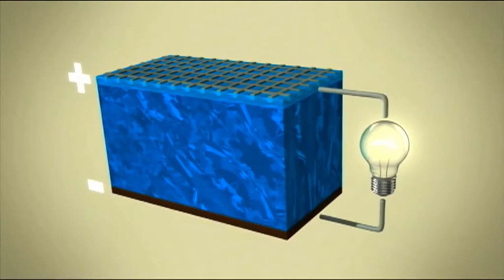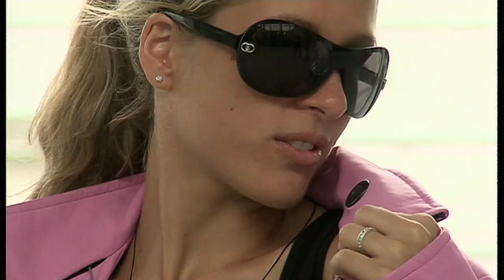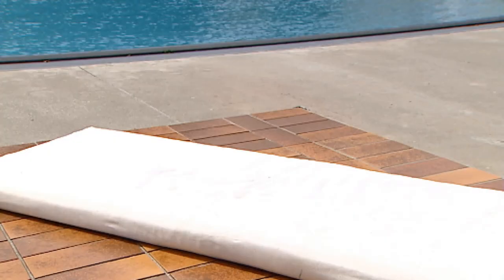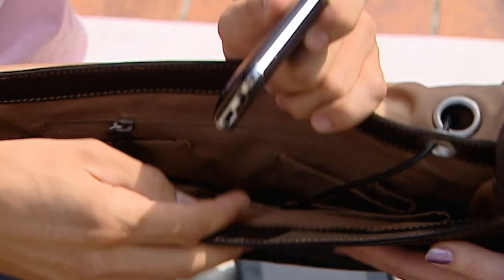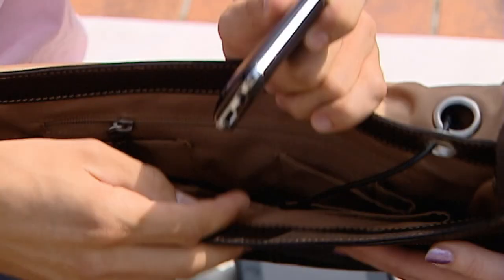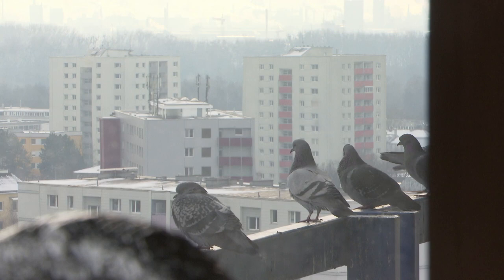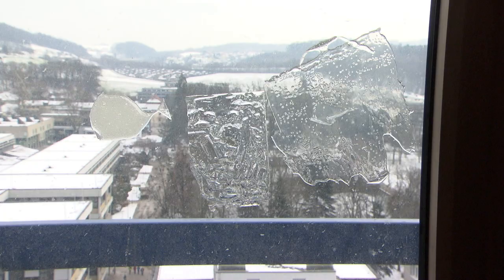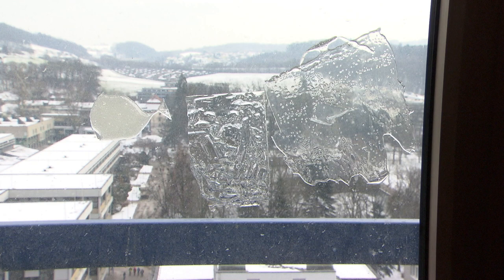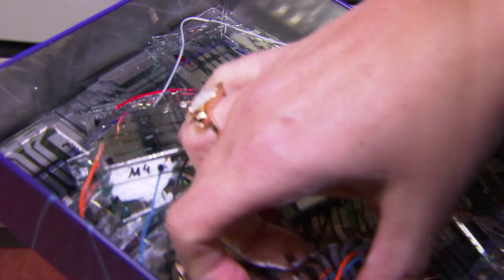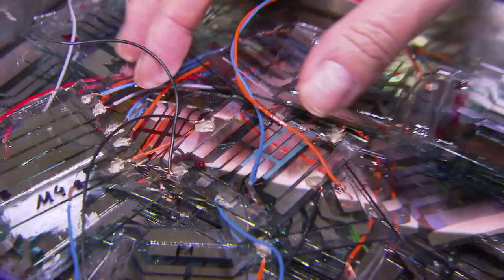But how do these new, wafer-thin solar cells benefit us in our everyday lives? Through intelligent clothing, for example, for communication or to measure our pulse. And if we're out and about and without a socket to plug into, we could charge our phones with this solar bag. But the scientists in Linz have set their sights even higher. There's the option of making these solar cells semi-transparent and integrating them directly into windows.